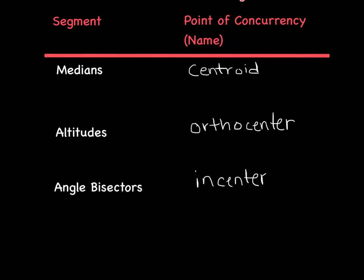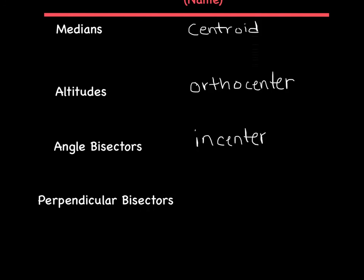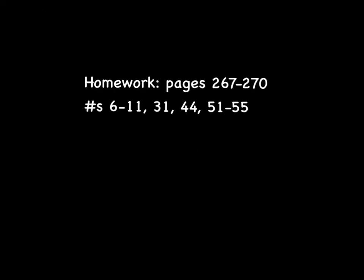And last but not least, we have the perpendicular bisectors. The perpendicular bisectors point of concurrency is called the circumcenter. We will talk more about all of these tomorrow. We are now at our favorite part, the homework. Hope you enjoyed the video.